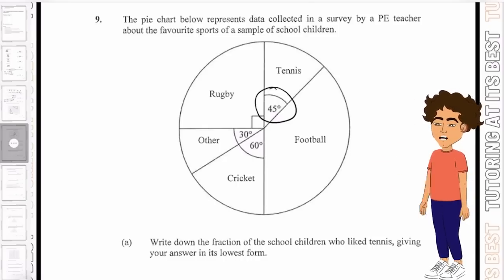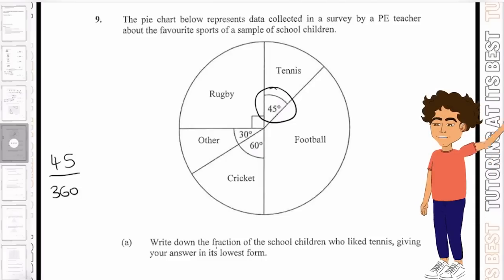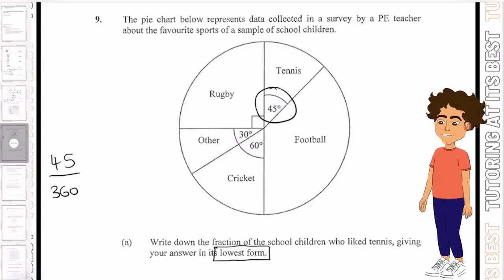So that gives us 45 over 360 degrees. But they now want our answer in the lowest form. We need to find one common divisor. So if we divide both sides by 9, we get 5 over 40.